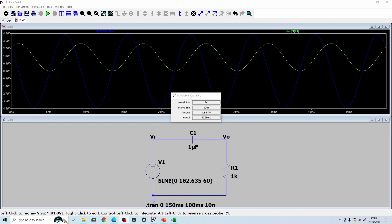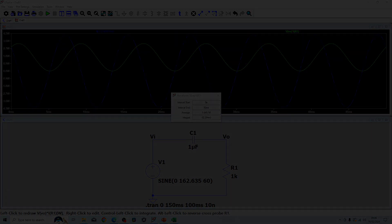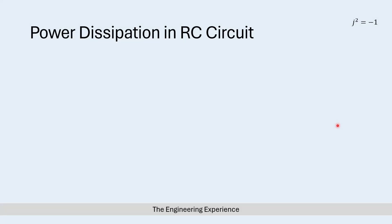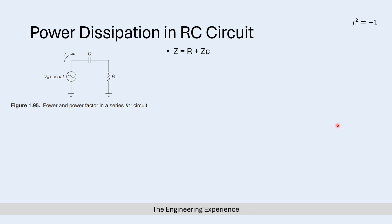Now let's look at the maths and show using equations that all the real average power is dissipated in the resistor. The impedance of this RC series circuit is equal to the resistance R plus the impedance of the capacitor, which is minus j over omega C, where omega is the radial frequency 2πf. Plugging in the capacitor impedance, the total impedance becomes R minus j over omega C, and our voltage input is V₀.